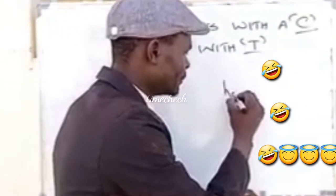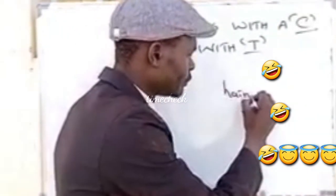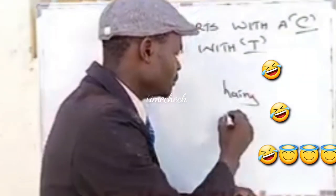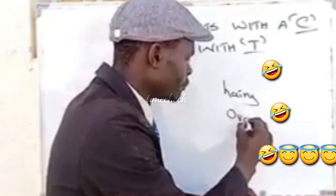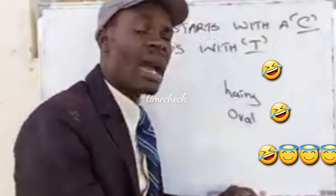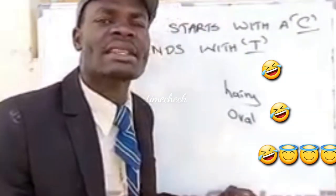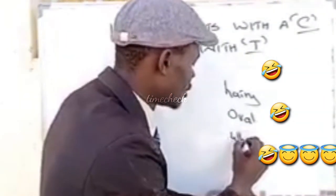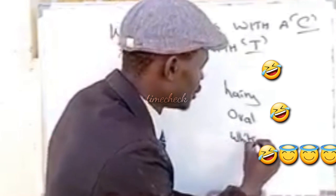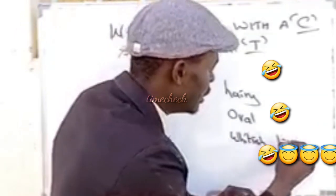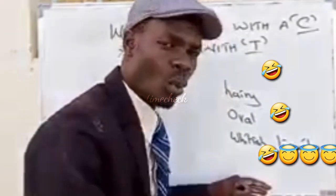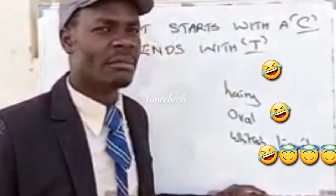First, it is airy. Second, it is oval. And third, it has a whitish liquid. What is it?